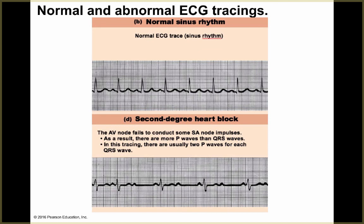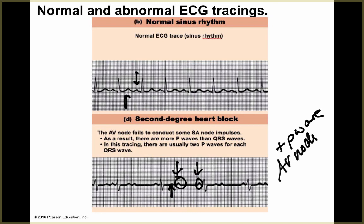A second degree heart block is characterized by extra P waves — you can see two P waves where there should be one, or a P wave that isn't followed by a QRS complex. The AV node fails to conduct all impulses from the atria to the ventricles.